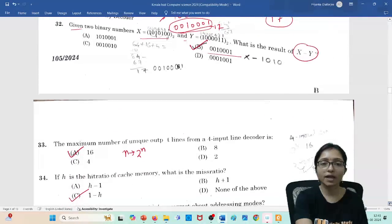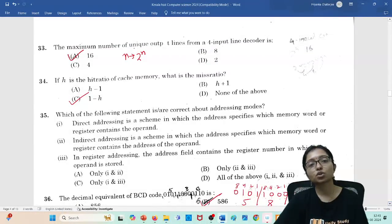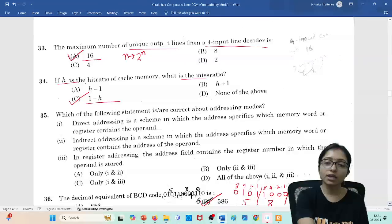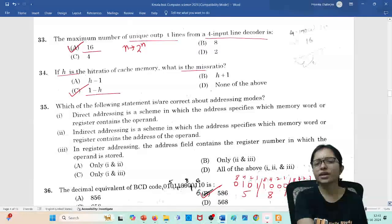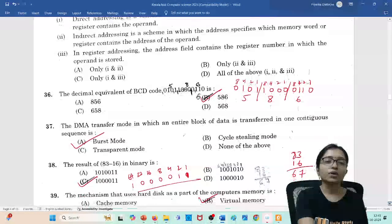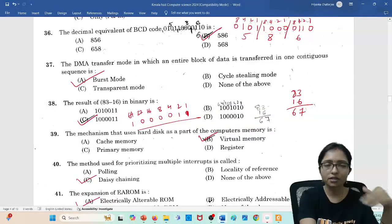The maximum number of output lines possible in a 4-input decoder: decoder is n to 2^n, so 2^n means 2^4 = 16. So answer will be 16. The hit ratio is given as h, so what will be the miss ratio? It is 1 minus h. Actually miss is this, so exactly ratio we can't say, but it is the correct answer. Question 35 I did not get the time to read, I will tell you in the next class.